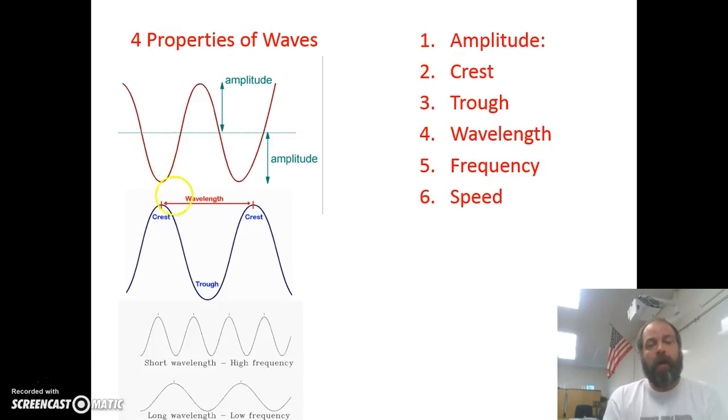The wavelength is a spot on a wave and a corresponding spot on the next wave. Most scientists measure wavelength from crest to crest. However, you can also measure it from trough to trough if you wanted to. The wavelength could be short, if you look down here, short wavelength, or it could be a longer wavelength. Depending on how long that wavelength is, if it's a short wavelength, it's what we consider a high frequency. If it's a long wavelength, it's considered a low frequency.